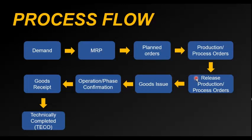Why should we release the production order rather than going directly to goods issue? The release process confirms that the operations defined in the production order — coming from the routing of the finished product — and the components from the bill of material have been checked thoroughly by the production supervisor. He gives a green light that all components and operations are correct and production can begin on the shop floor.